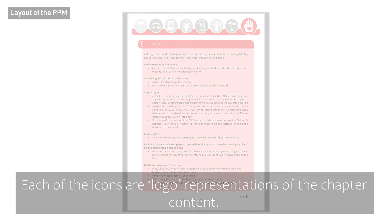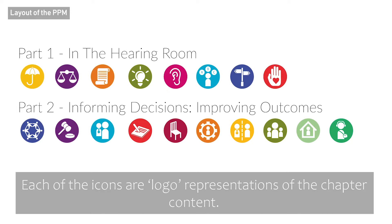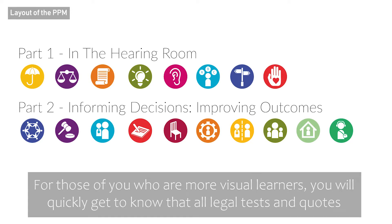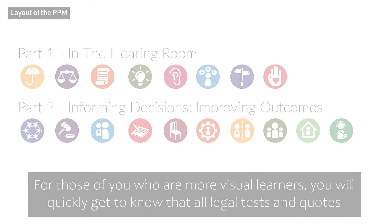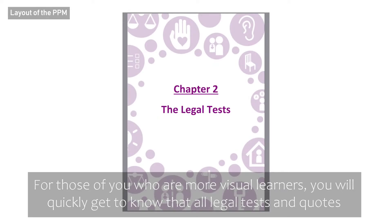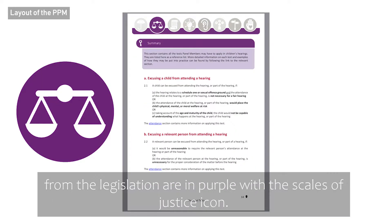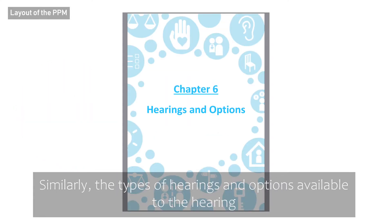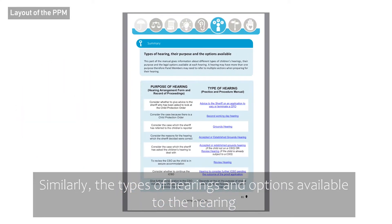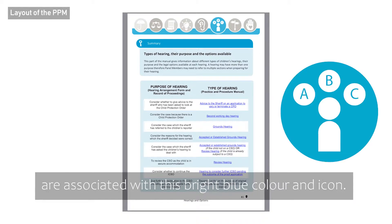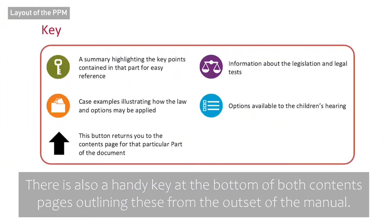Each of the icons are logo representations of the chapter content. For those of you who are more visual learners, you will quickly get to know that all the legal tests and quotes from the legislation are in purple with the Scales of Justice icon. Similarly, the types of hearings and options available to the hearing are associated with a bright blue colour and icon. There is also a handy key at the bottom of both contents pages outlining these from the outset of the manual.